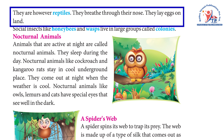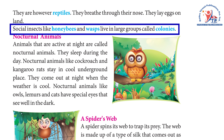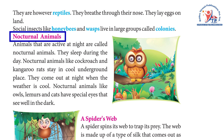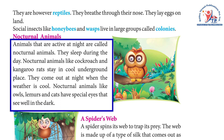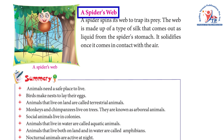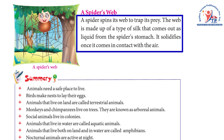Social insects like honeybees and wasps live in large groups called colonies. Nocturnal animals are those that are active at night and sleep during the day. Nocturnal animals like cockroaches and kangaroos stay in cool underground places and come out at night when the weather is cool. Nocturnal animals like owls, lemurs, and cats have specialized eyes that see well in the dark. A spider spins its web to trap its prey — the web is made of a type of silk that comes out as liquid from the spider's body.